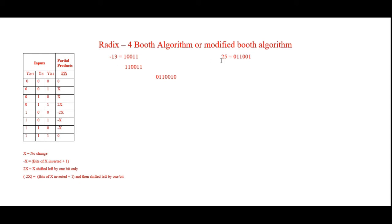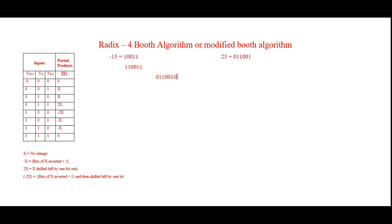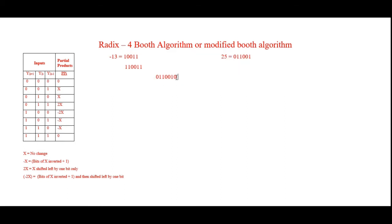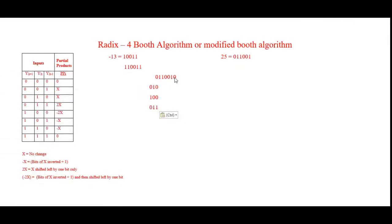The next step is to take one of the two numbers to perform the algorithm on. In this example I have taken the number 25. I insert a 0 at the LSB position — this is part of the algorithm process. I have written the representation of 25 here and inserted a digit 0 at the LSB.